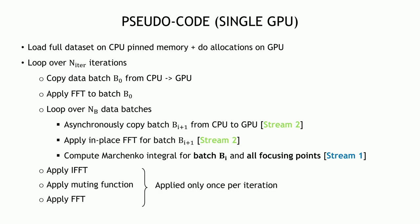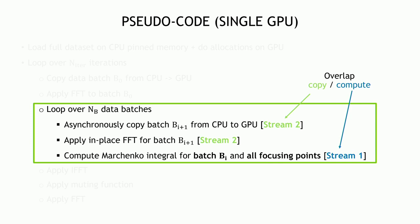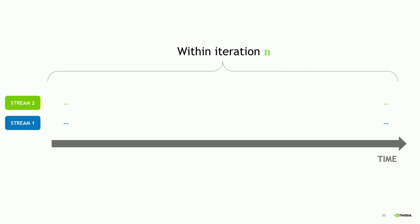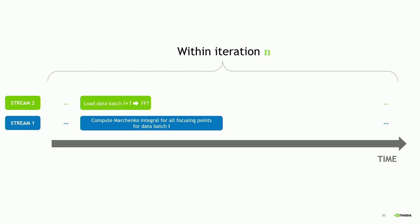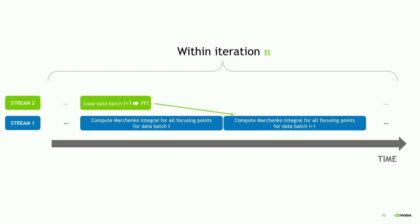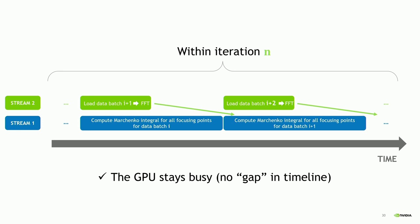Here is a schematic diagram of what the profiler timeline looks like. The horizontal axis is time. On stream one, we compute the Marchenko integral for all focusing points for data batch i. While this is happening, stream two loads the next batch and applies the FFT, which will then be reused for the next computation. The key point is that the GPU stays busy the entire time — there is no gap in the timeline — so we are able to hide memory copy latency.